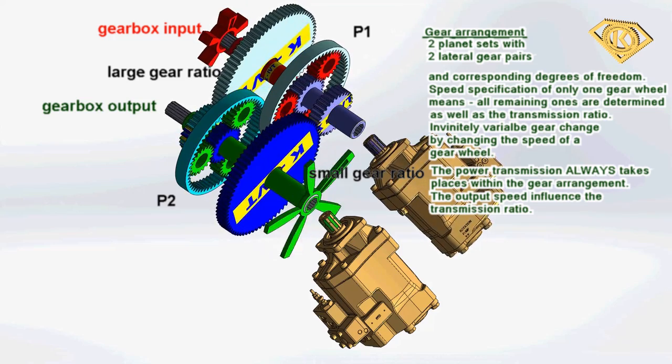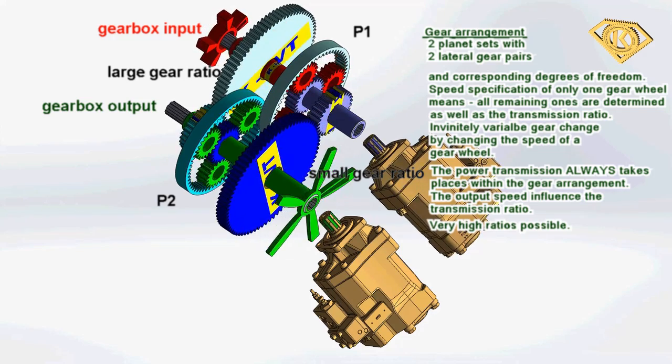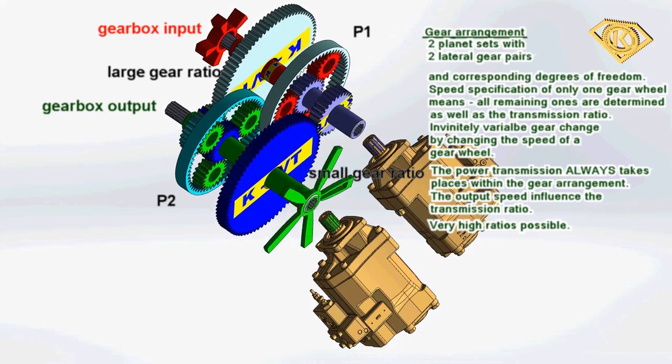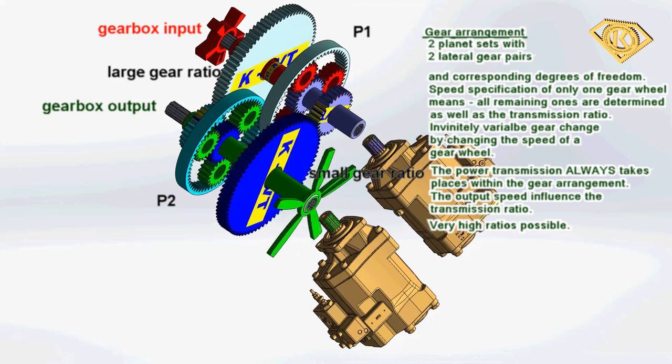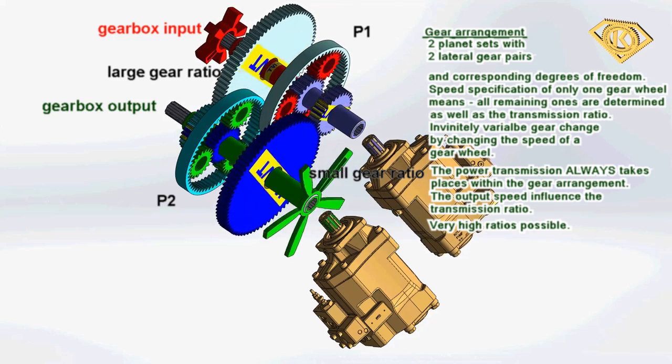If the output speed is fully transmitted to this gear wheel, both have the same speed. The highest design transmission ratio has been achieved.